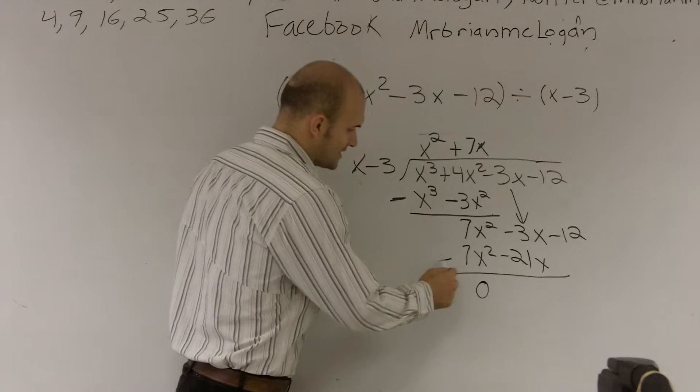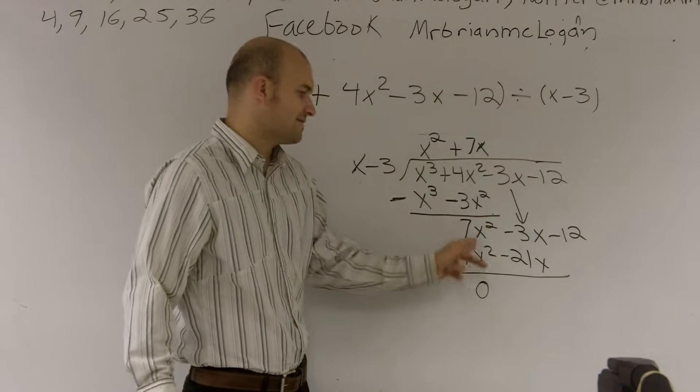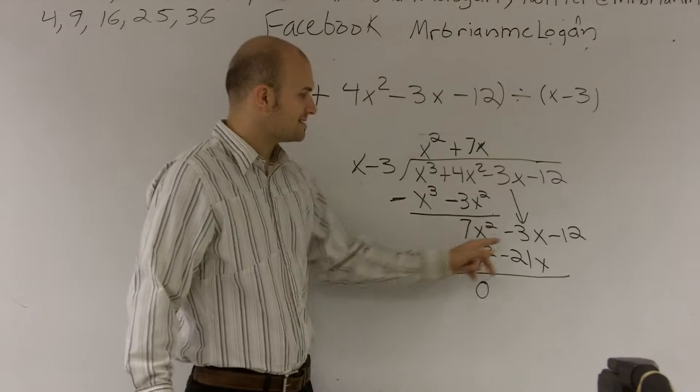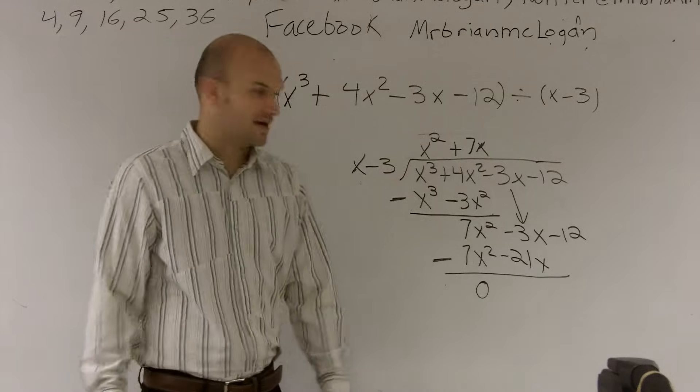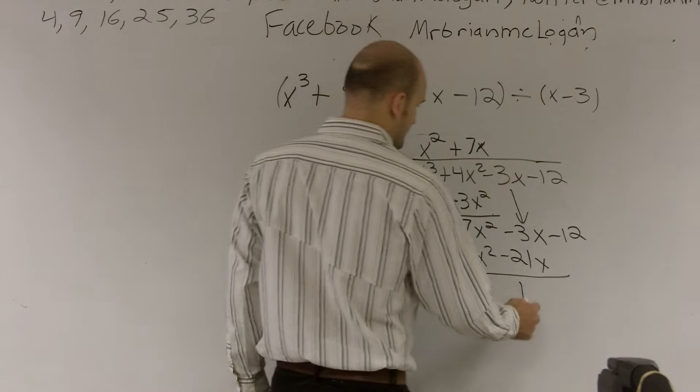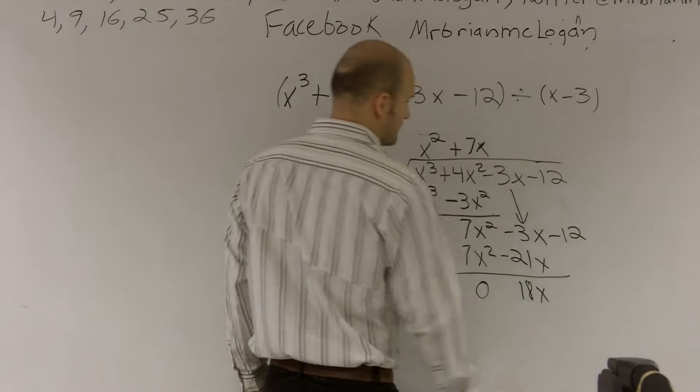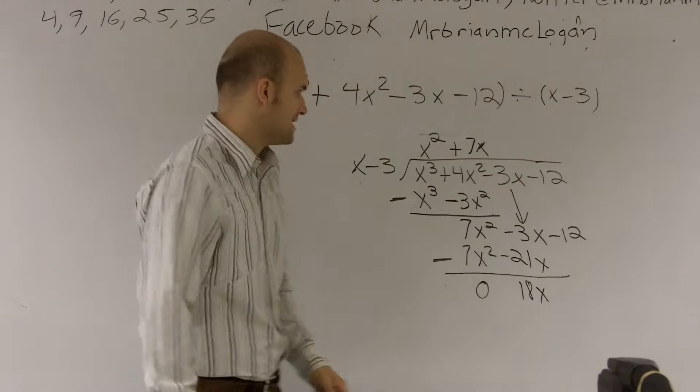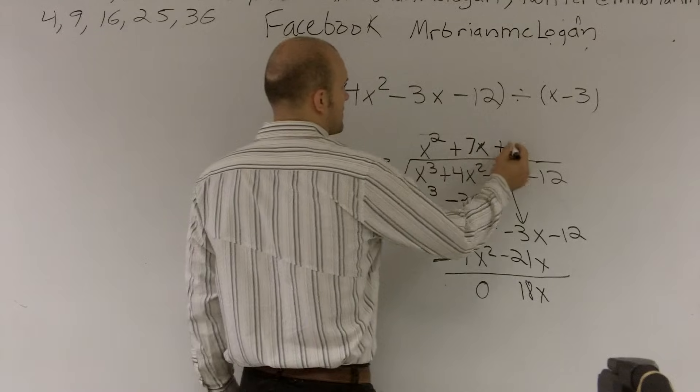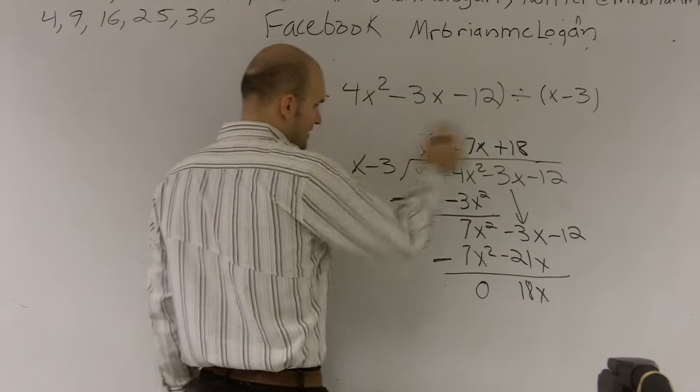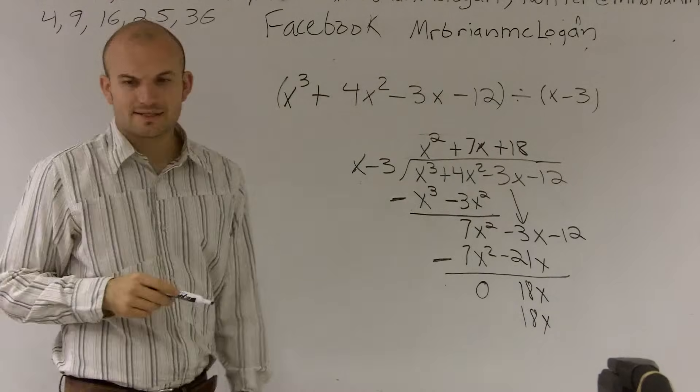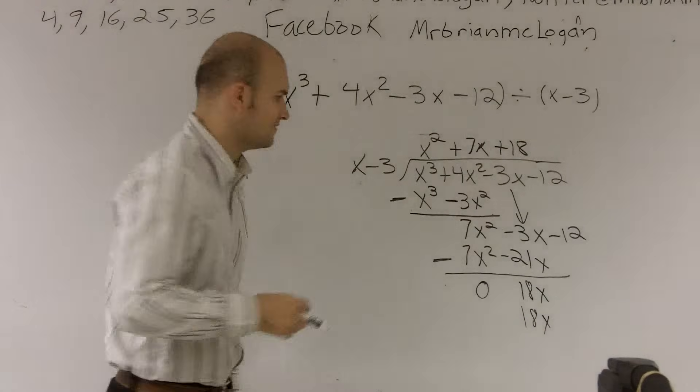Again, we're subtracting the whole line, right? So negative 7x squared minus 7x squared is 0. Negative 3x minus a negative 21x is going to become a positive 18x. x goes into 18x 18 times. 18 times x is 18x. 18 times negative 3 is a negative 54.